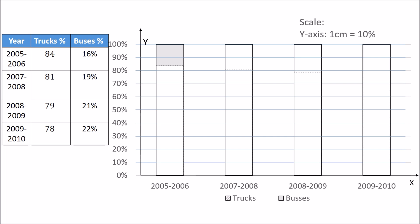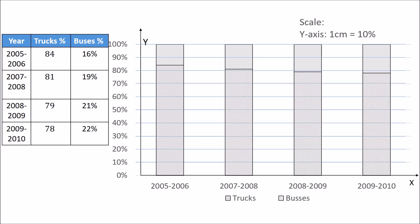Similarly, for the next year, the percentage of trucks is 81. I will mark a line at a height of 81 for the second year. The above portion represents the number of buses, whereas the below portion represents the number of trucks. All we have to do is shade the below portion or the above portion to represent the number of trucks and buses. This is your percentage bar diagram.